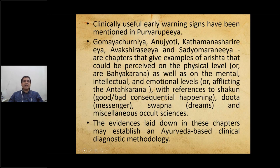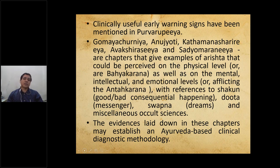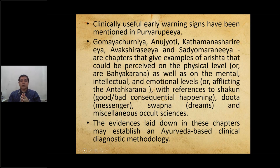Chapters like Gomaya Churniya, Anujyoti, Katamani Shirasiya, Avakshiraziya, and Sadyamaraniya give examples of Arishtas perceived on the physical, mental, intellectual, and emotional levels. With reference to Shakuna (good or bad consequential happenings), Duta (messenger), Svapna (dreams), and miscellaneous occult sciences, the evidence in these chapters establishes an Ayurveda-based clinical diagnostic methodology.